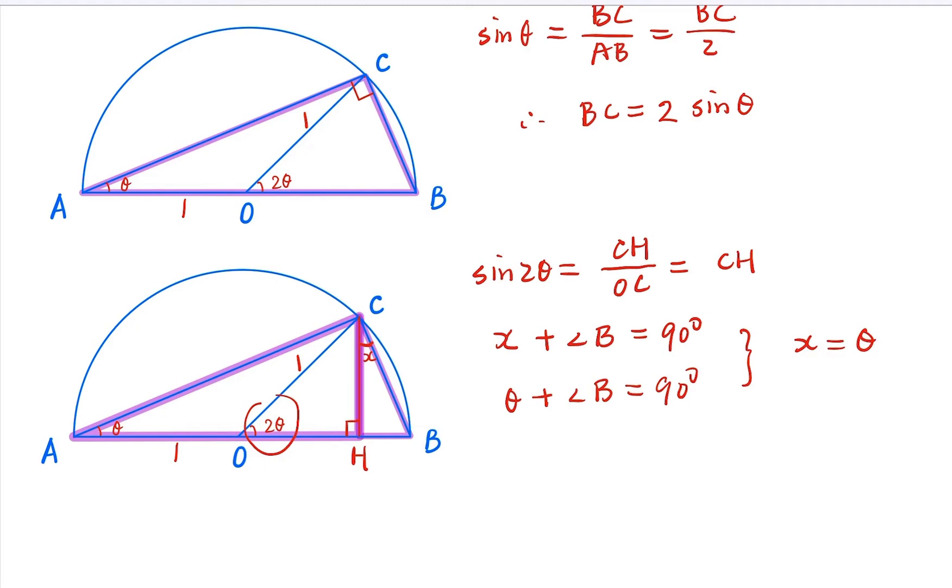Now, in the smaller triangle here, what is cosine θ or cosine X? By definition, that is going to be CH over BC.